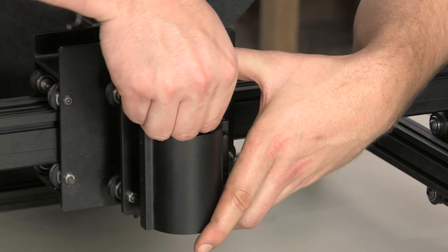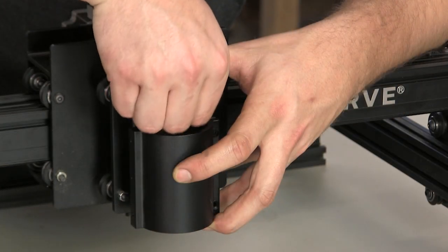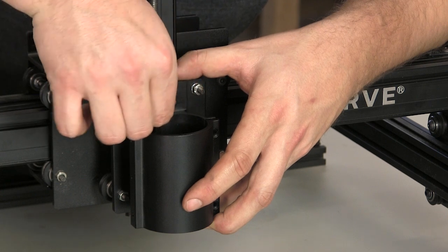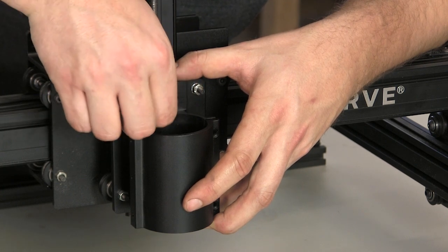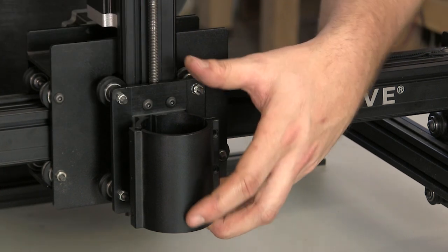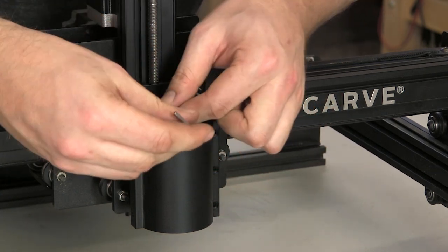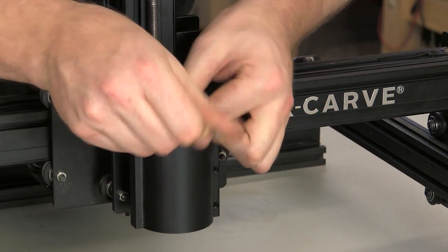Align the two holes in the spindle mount with the Delrin nut and thread two screws into it. Start by getting these screws finger tight, as it's easy to cross-thread the Delrin. Tighten the screws down with the wrench.